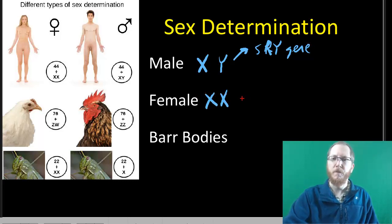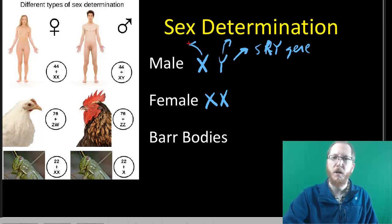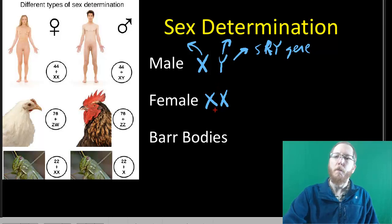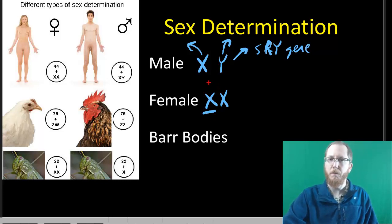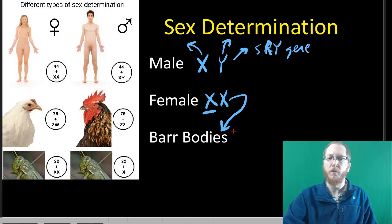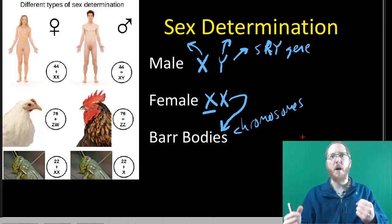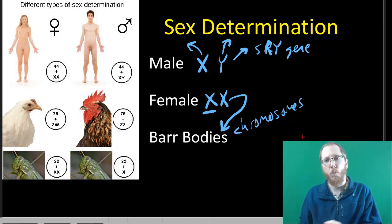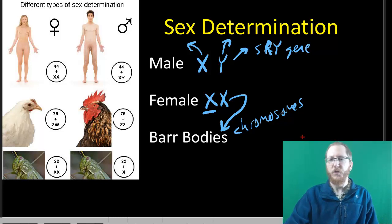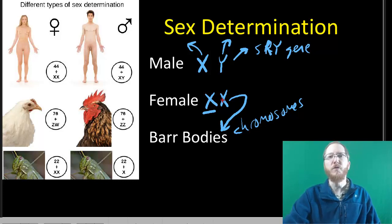Females have two X chromosomes. Only the male can determine the gender of the baby, based on whether the sperm carries an X or a Y — the egg will always have an X from mom. Since males get by with one X, females only need one active X as well, so they leave one X chromosome packaged up as what we call a Barr body, rather than actively using it.